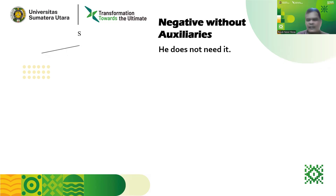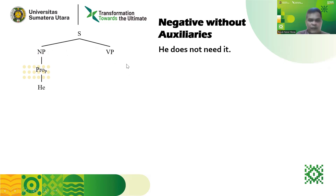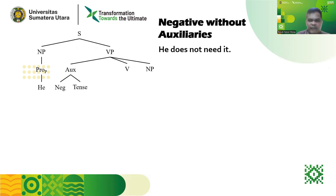Now let's analyze the sentence. We have a sentence composed of NP and VP. The NP is represented by personal pronoun 'he.' Once again, the core of the transformational rule for negatives is in the verb phrase. The verb phrase is composed of auxiliary, verb, and NP. Because we focus on a negative sentence, 'negative' must be one of the elements of the auxiliary. And we have only 'tense' here. So we have only two branches: negative and tense. Why? Because we don't have any other auxiliaries.